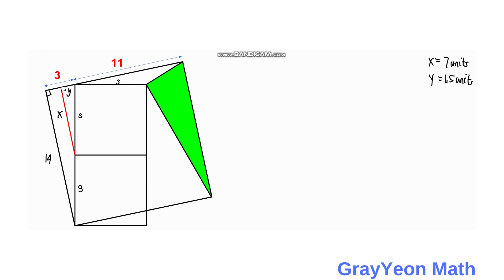Next, we draw a line from the intersection point of the small square above and the larger square, drawing a perpendicular line down to the base, and we again form a right triangle.